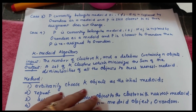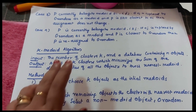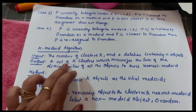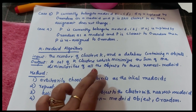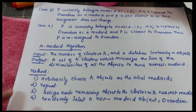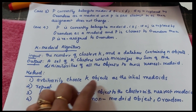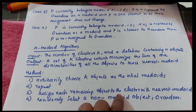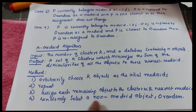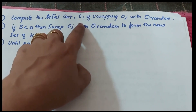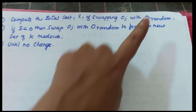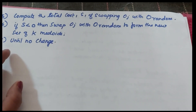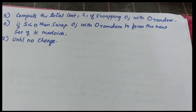The K-Medoid algorithm: input is the number of clusters K and a database of N objects; output is a set of K clusters minimizing the sum of dissimilarity of objects to their nearest medoid. Method: arbitrarily choose K objects as initial medoids; repeat — assign each remaining object to the cluster with the nearest medoid; randomly select a non-medoid object O_random; compute the total cost S of swapping O_j with O_random; if S < 0, swap O_j with O_random to form a new set of K medoids; repeat until no change.